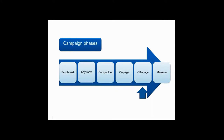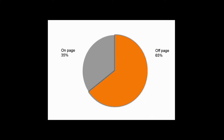Here are the phases of the process I created and apply to SEO campaigns. Through other webinars we've covered benchmarking through analytics, determining your keywords, looking at your competitors, on-page SEO — your title tags, H1 tags and so on — and then off-page SEO, then measure and refine. This should be a cyclical process. Today we're going to focus on off-page for a short period.